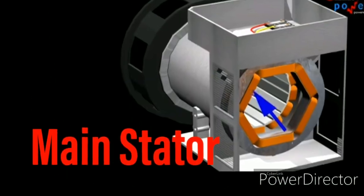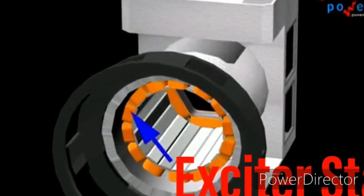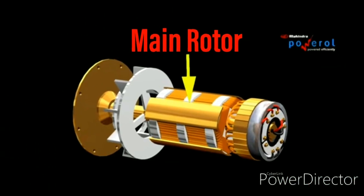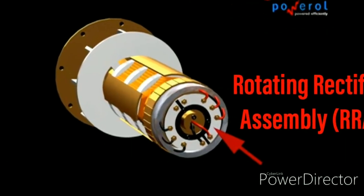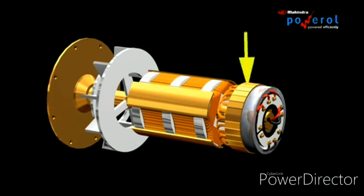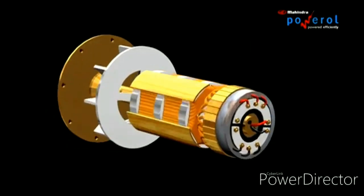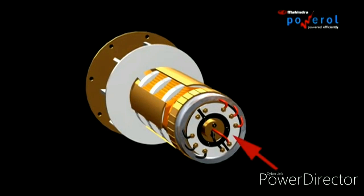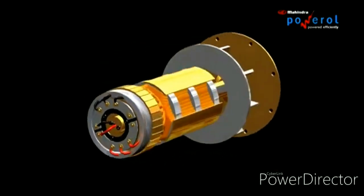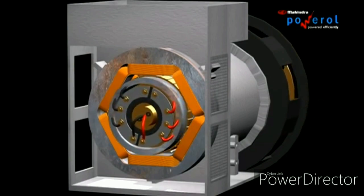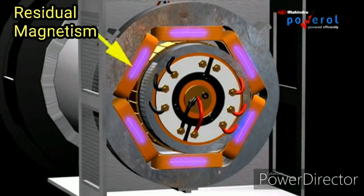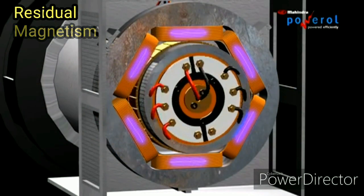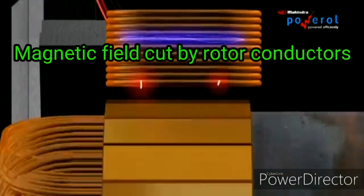The main stator and the exciter stator are the key components. We also have the exciter stator and the external assembly. The current stator will be the pilot generator, and we will control the exciter stator.